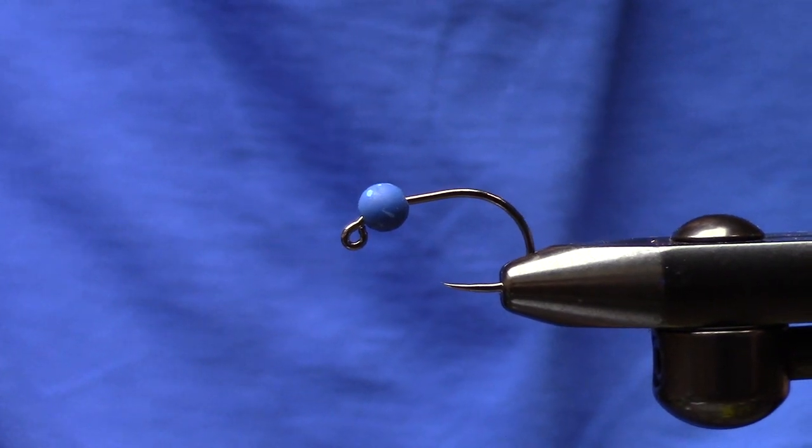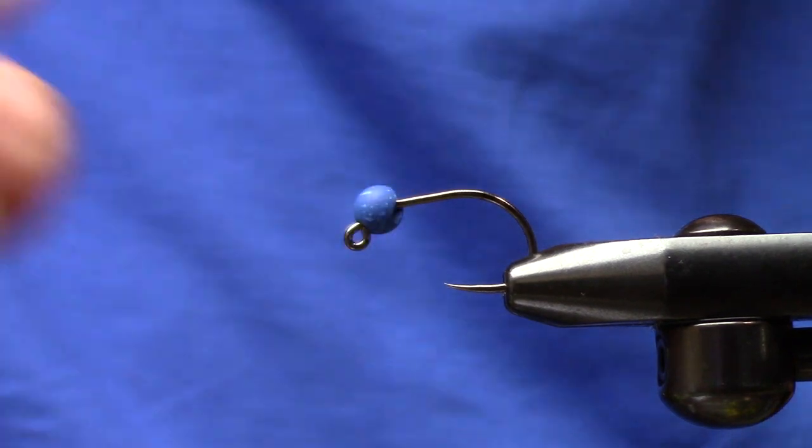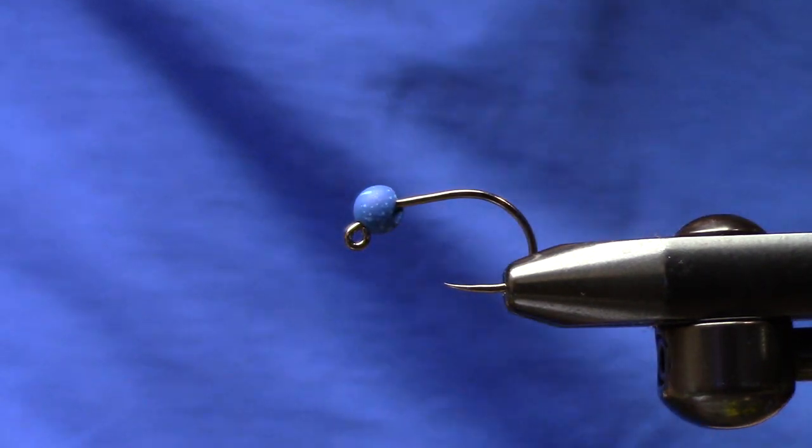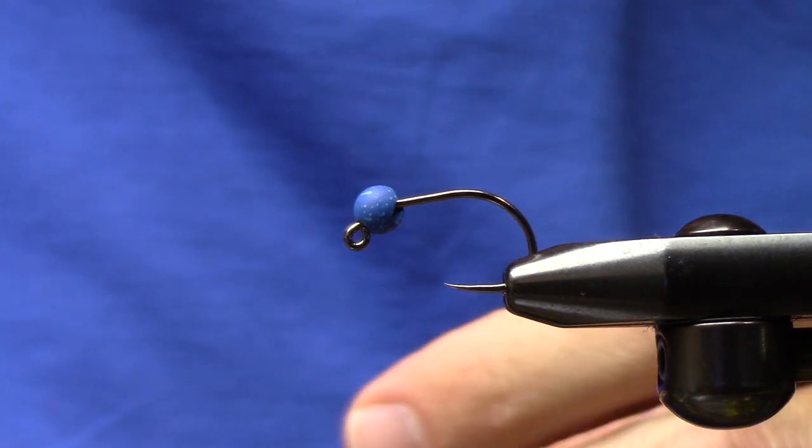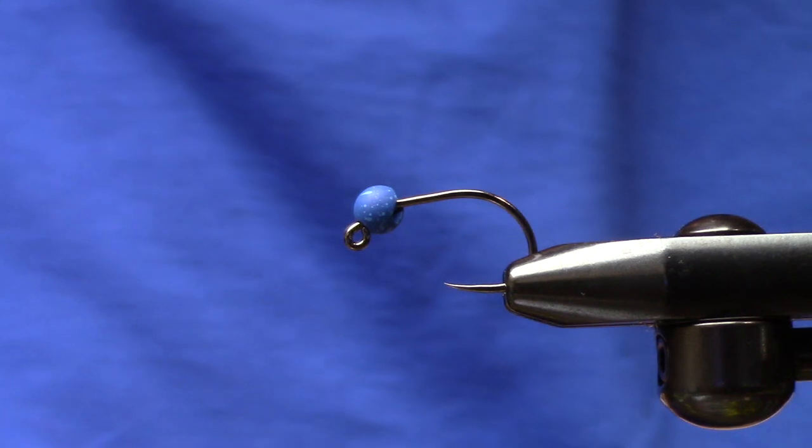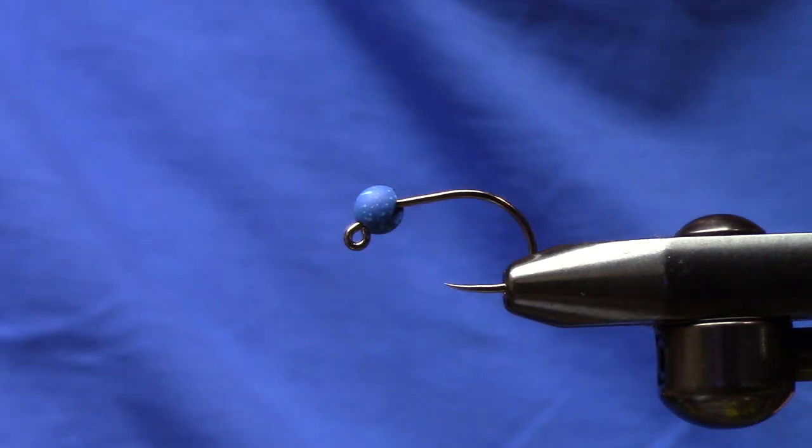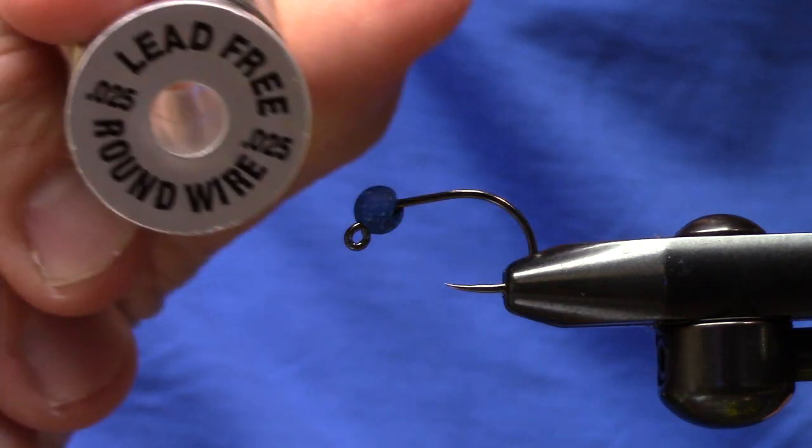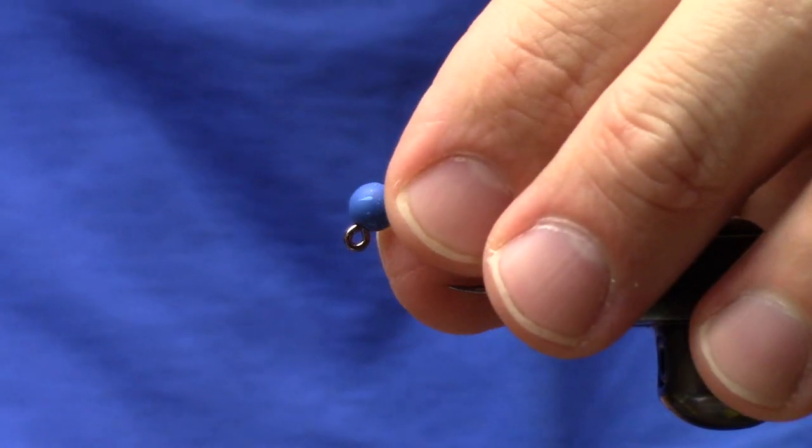What's up guys, Matt here from Loon Outdoors, and today we're tying a copper john for the fourth of July. This is a special edition America copper john - only American trout will eat this one because they're patriotic. We're going to start with some 0.25 non-lead wire. I've got a Firehole 551, a hairline molded jig bead in blue, and I'm going to take about eight wraps or so of this non-lead wire.